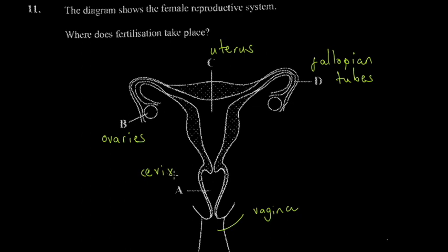The cervix is not an opening — it's actually a tube. On the female reproductive system there are two openings, excluding the anus: the vagina and the urethra. The urethra is for urine; the vagina is for the passage of sperm into the uterus. The anus is for defecation and is not part of the reproductive system.